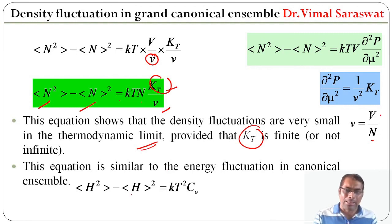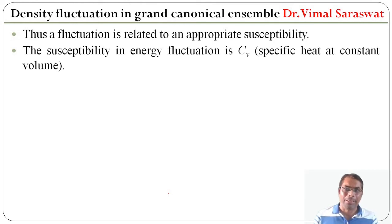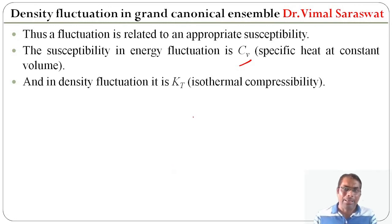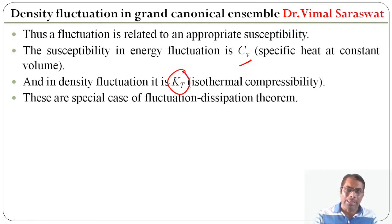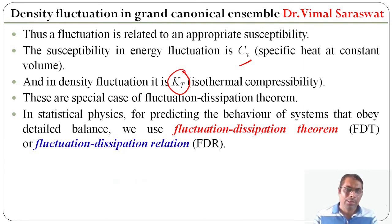This result is analogous to energy fluctuation in the canonical ensemble, which is given by a similar formula. In general, a fluctuation is related to an appropriate susceptibility: in energy fluctuation the susceptibility is CV (heat capacity at constant volume), and in density fluctuation it is the isothermal compressibility κT. These are special cases of the fluctuation-dissipation theorem.